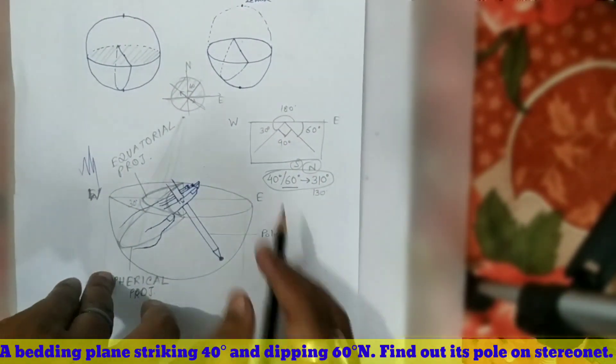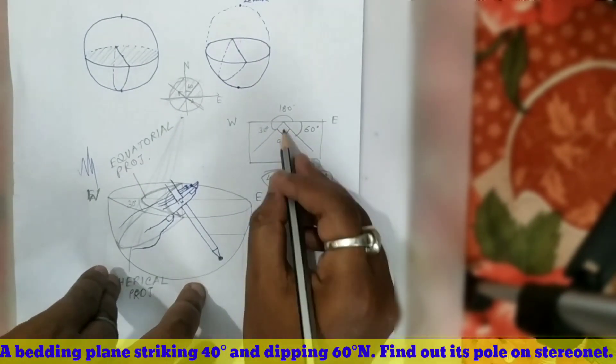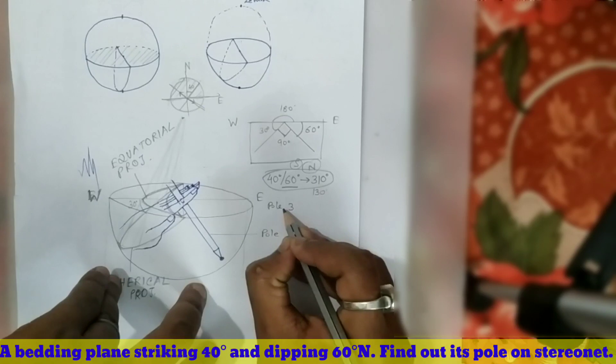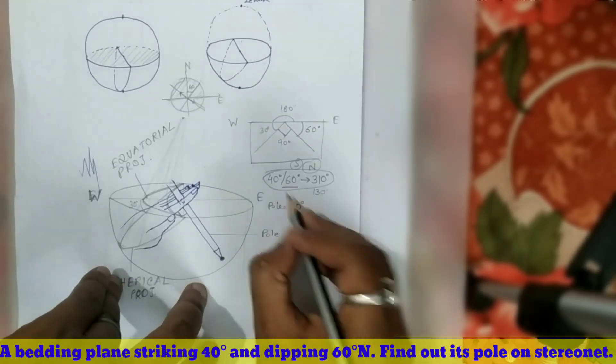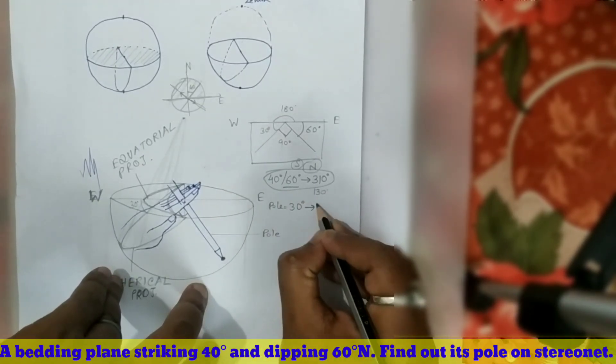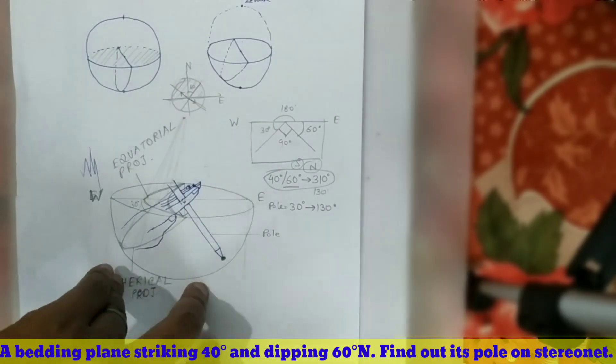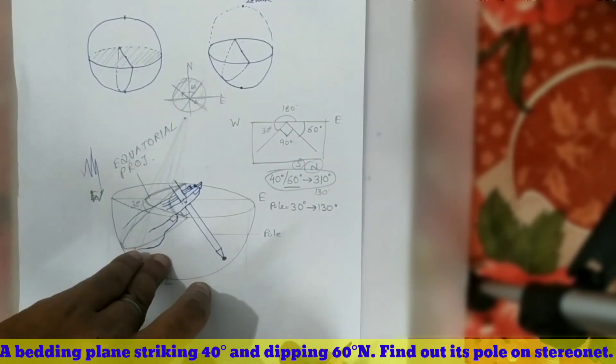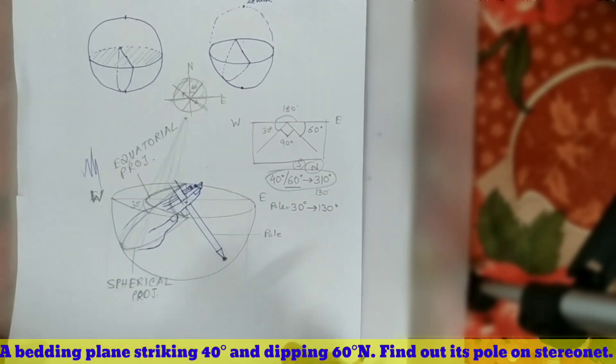Now the pole of this is complementary, so here it is 60°, so the pole will be 30° towards 130°. But now we have to plot it on the stereonet.